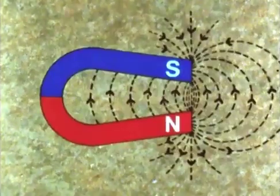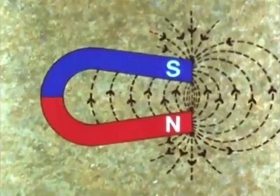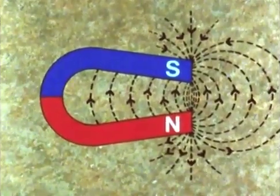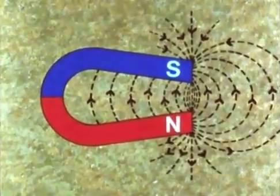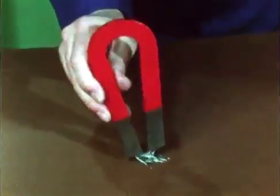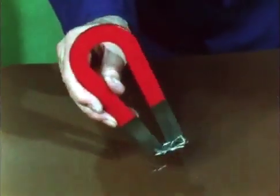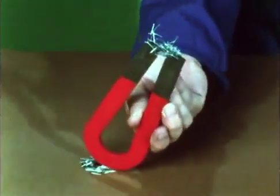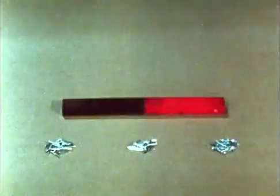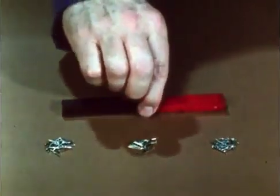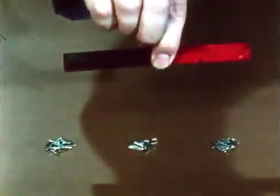Similarly with horseshoe magnets, the lines of force are packed close together near the poles, and the field is very strong between them. All the magnetic strength of the horseshoe magnet seems to be concentrated around the poles. This is true of a bar magnet as well. There seems to be no magnetic force at the center.